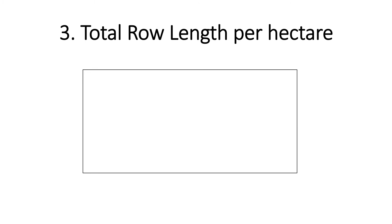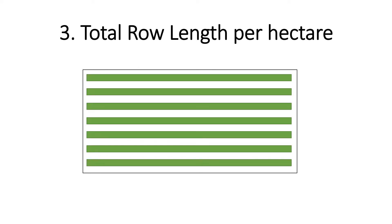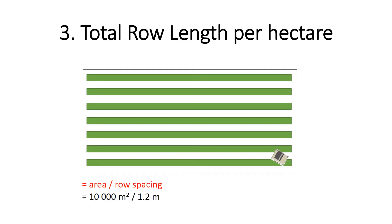Next, we calculate the total row length per hectare. If this is my field and these are my cane rows, we are simply trying to find out the total distance per hectare over which the fertilizer must be spread. We do this by taking the area and dividing it by the row spacing. We know that an area of one hectare is 10,000 square meters, and we divide that by my row spacing of 1.2 meters, giving me 8,333 meters.